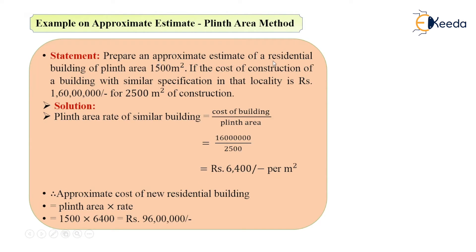To revise: the plinth area of the proposed building was 1500 meter square, and the existing structure's cost was 1 crore 60 lakh for 2500 meter square. First, the plinth area rate of the similar building was calculated as cost divided by plinth area, which came to 6400 per meter square. Then the approximate cost of the building was found as plinth area into rate, which is 96 lakh rupees. This was the video on approximate estimate by plinth area method. Thank you.